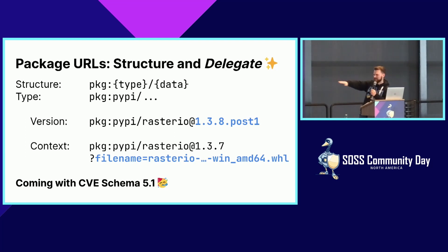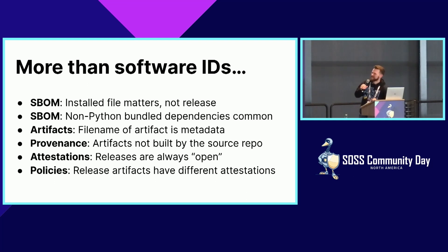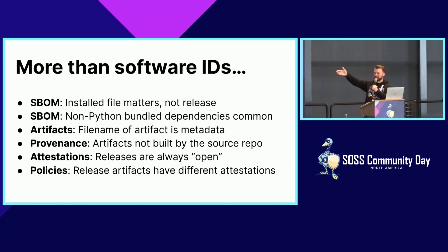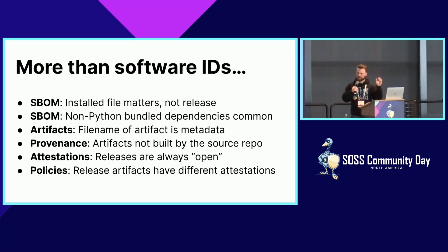CVE Schema 5.1 includes some support for Package URLs — which is exciting. Along this journey, even though we didn't cover that much ground, we uncovered lots of little things: the specific file that got installed matters for Python, there's not really a concept of a release, and non-Python bundled dependencies are totally normal for many ecosystems. File names being metadata is a problem both Ruby and Python share. There's just a whole bunch of things that make it really difficult, from a high-level design of secure policies, tools, and workflows, to actually address — and this is just from trying to fix one vulnerability in one component.